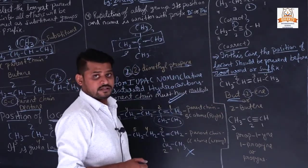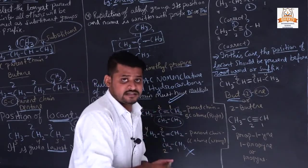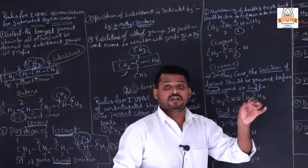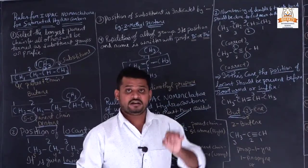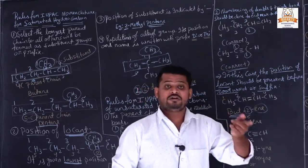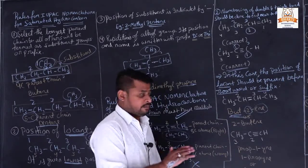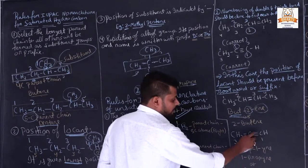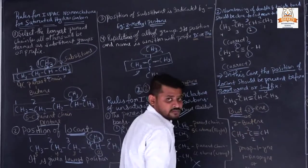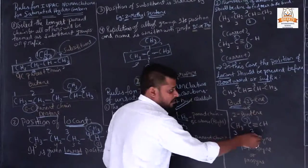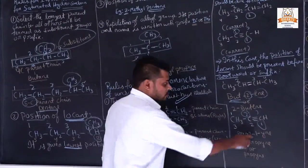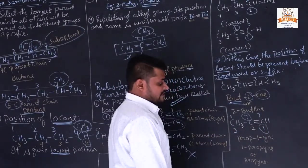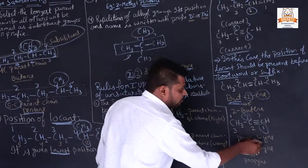Did you understand how to write unsaturated hydrocarbon names? First, take the parent chain which must include the multiple bonds. Second, give the position of the locant nearest to the bond. Third, write the position of the locant before the suffix or before the root word. See another example for clarity: in another structural formula the triple bond position — going right to left — is at position 1.